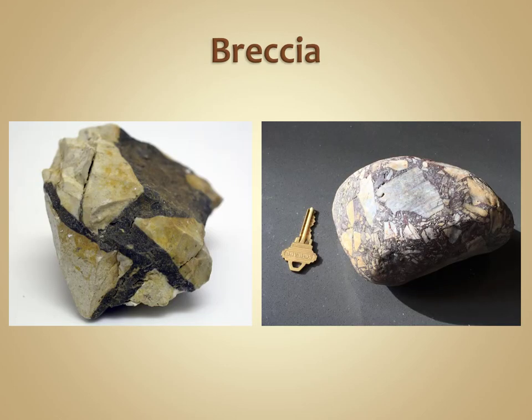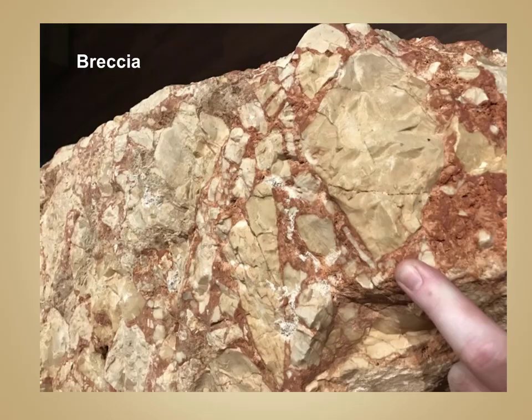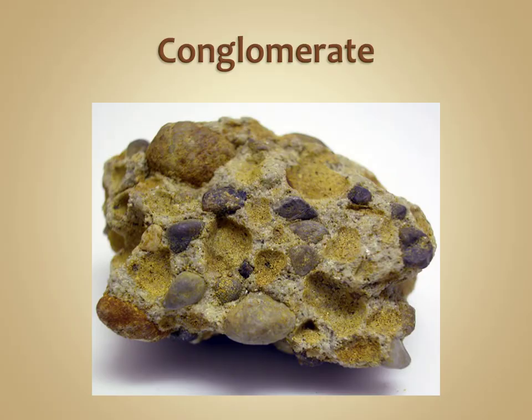In breccia, the coarse-grained rock fragments are very angular. As you can see in these photographs, the particles that make up breccia rock are very angular in appearance. In contrast, notice in this photograph of conglomerate that the constituent particles that make up the rock are much more rounded in appearance.